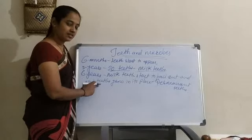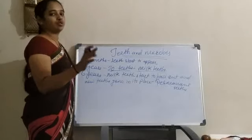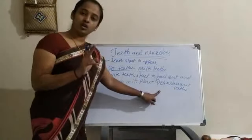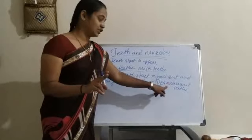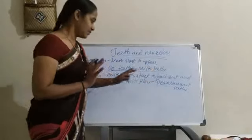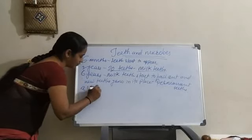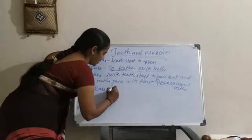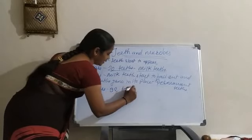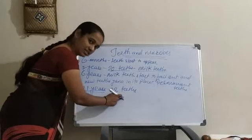Why are these teeth called permanent teeth? Because once permanent teeth fall, no new teeth can grow in their place. We know that milk teeth fall out and new teeth grow in their place, but once permanent teeth fall, no new teeth can grow. That is the reason they are called permanent teeth — these teeth are going to stay with us till our death. When the same person grows up to the age of 21 years, an adult person has 32 teeth in their mouth.